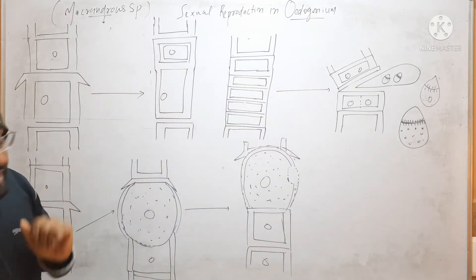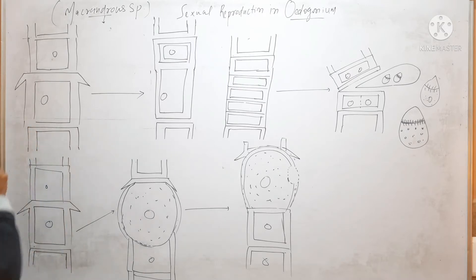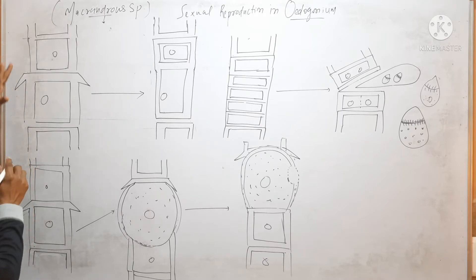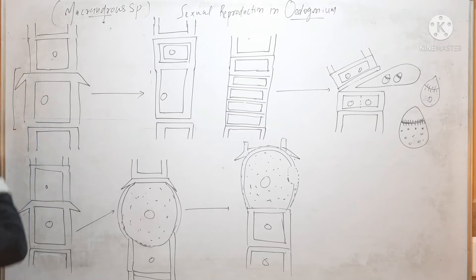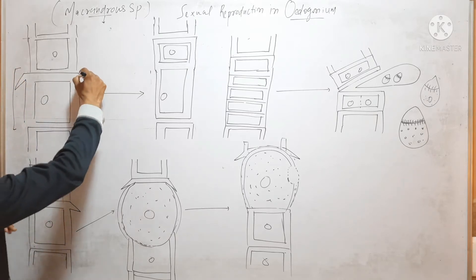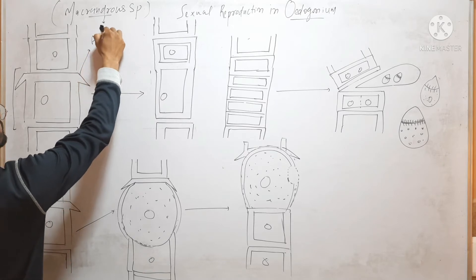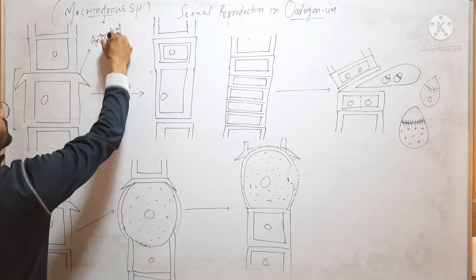We will start sexual reproduction with the development of antheridium. Any intercalary cell which has a cap can function as an anthridial mother cell. So in this filament, this cell which has a cap cell will function as the anthridial mother cell.